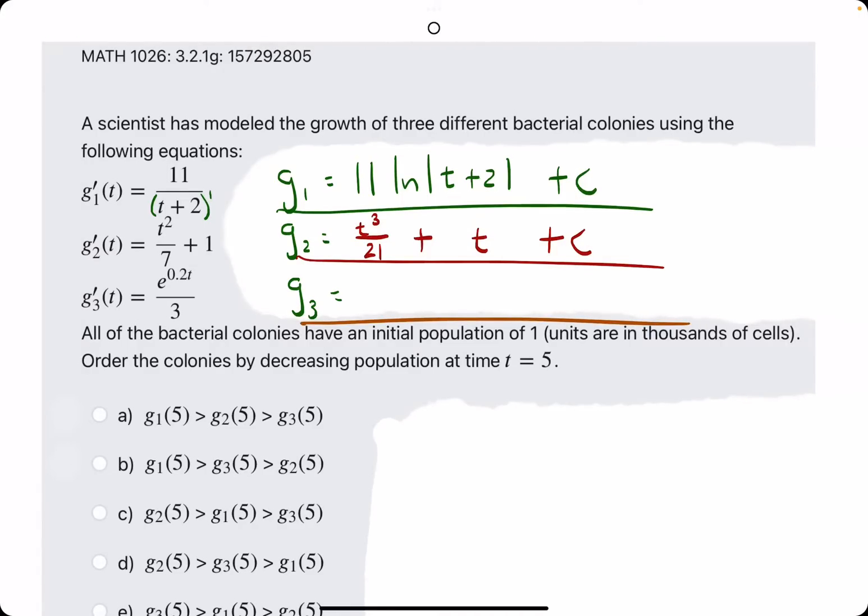G3, anti-derivative of any e term will be that same exact e term. And then, because the 0.2 is in front of the t, we want to divide by 0.2 to accommodate for the chain rule. Since there's no 0.2 here, we need to divide by 0.2 so that the 0.2 that comes out in front when doing the derivative of this will cancel out with the 1 on the bottom. Basically, whenever you have e to the number times t, the anti-derivative is that same e term divided by the coefficient of the exponent.